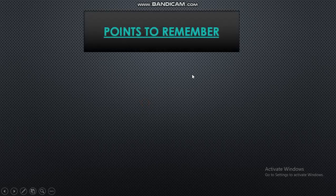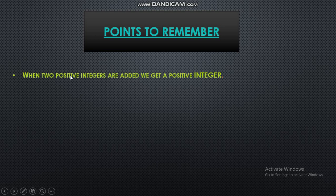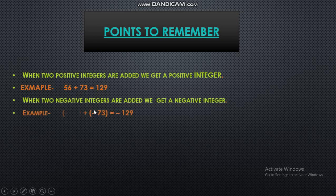You should remember some points while doing addition and subtraction of integers. When 2 positive integers are added, we get a positive integer only. For example, 56 plus 73 gives 129. When we add 2 negative integers, the answer is a negative integer. So minus 56 plus minus 73 gives minus 129.